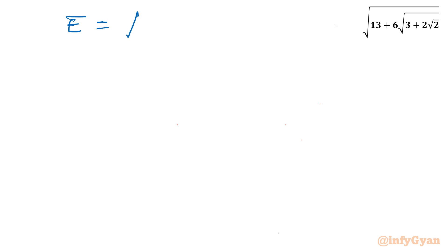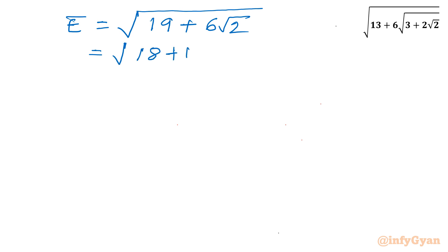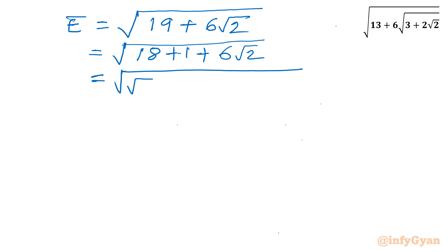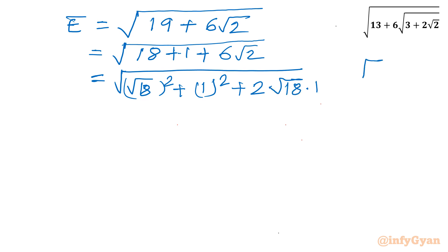Let us do the same practice again. I will write E equal to square root of 19 plus 6 times square root 2. Now I will split 19 as 18 plus 1, so I can write it as square root of 18 plus 1 plus 6 times square root 2. Again we can write 18 as (root 18) whole squared, and 1 as 1 squared. We know that root 18 is 3 root 2, since 18 equals 9 times 2.